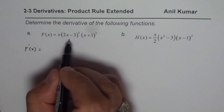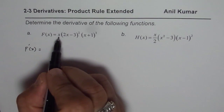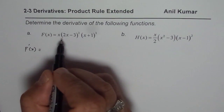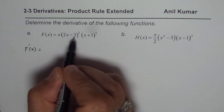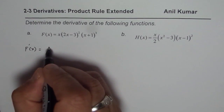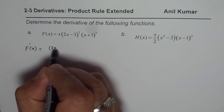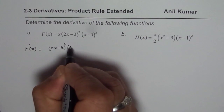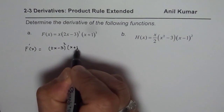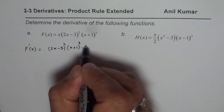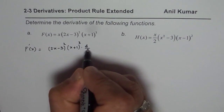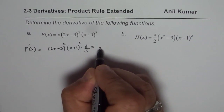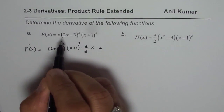In this case, the first term is the derivative of x times the other two. Let me write down the other two first: (2x minus 3) squared times (x plus 1) cubed, times the derivative of x. So this is my first term.